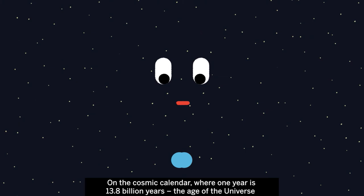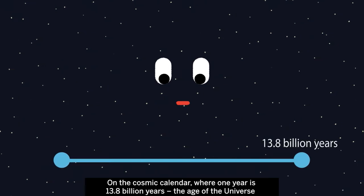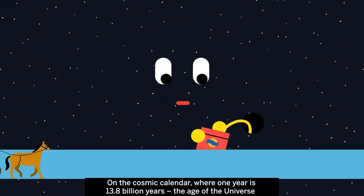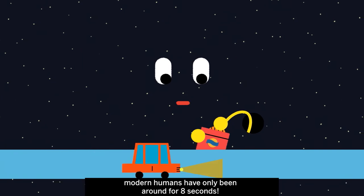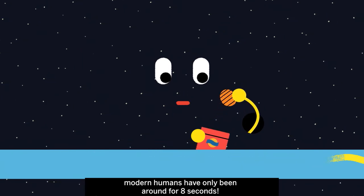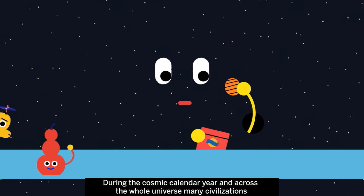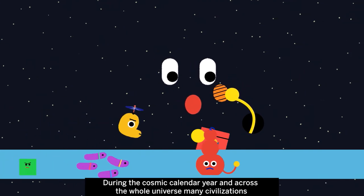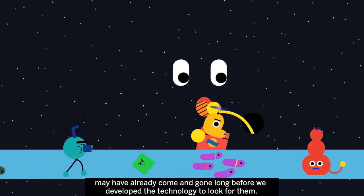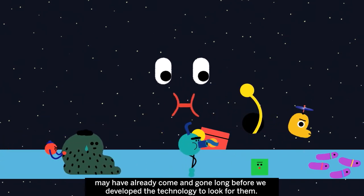On the Cosmic Calendar, where one year is 13.8 billion years, the age of the Universe, modern humans have only been around for 8 seconds. During the Cosmic Calendar year and across the whole Universe, many civilizations may already have come and gone, long before we developed the technology to look for them.